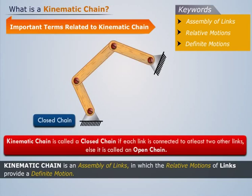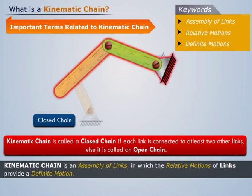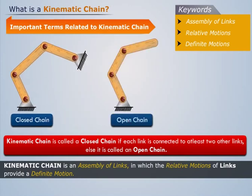A kinematic chain is called a closed chain if each link is connected to at least two other links. Else, it is called an open chain.